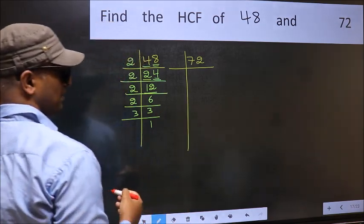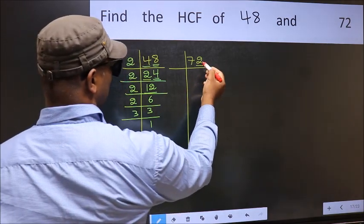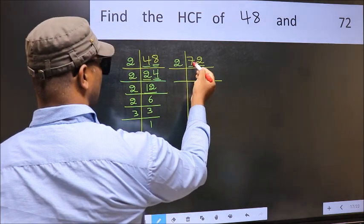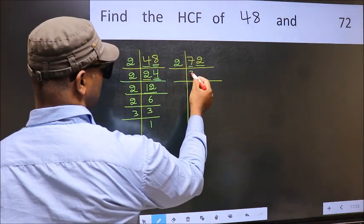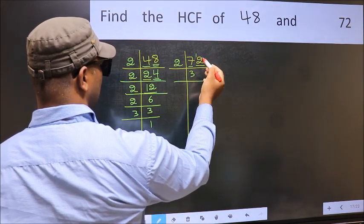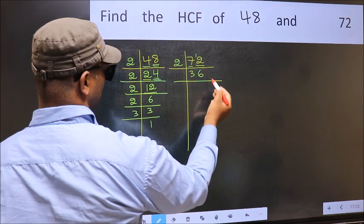Now the other number. Last digit 2, even, so take 2. First number 7. A number close to 7 in 2 table is 2 times 3 is 6. 7 minus 6 is 1, 1 carried forward, 12. When do we get 12 in 2 table? 2 times 6 is 12.